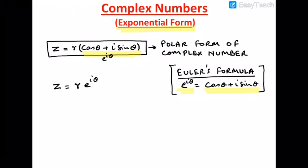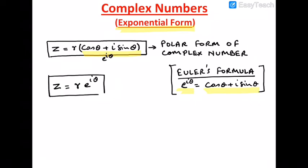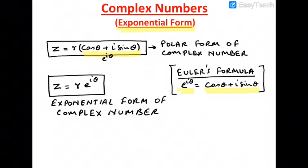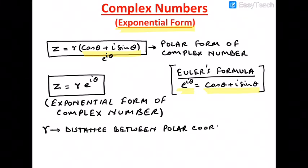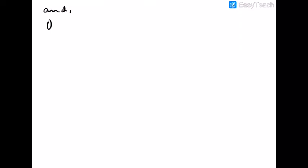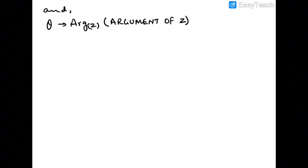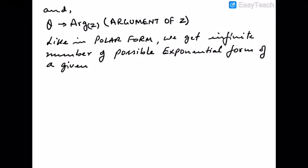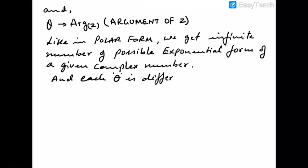And we get z = r·e^(iθ), and this is our exponential form of a complex number. Here r is the distance between polar coordinates (r, θ) and the pole, that is the origin (0, 0). θ, also known as the argument of z, is denoted by arg(z).